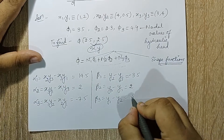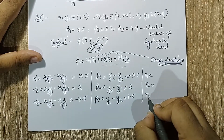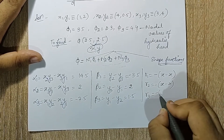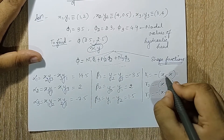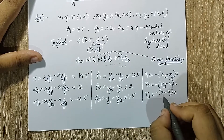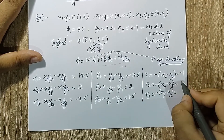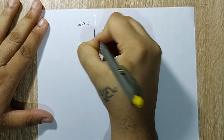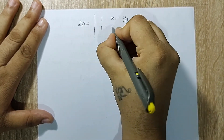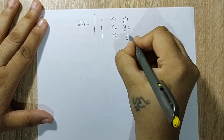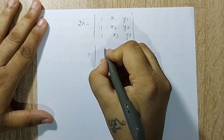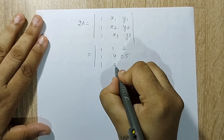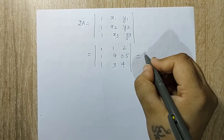The beta terms come out as minus 3.5, 2, and 1.5, and the gamma terms are minus 1, minus 2, and 3. After this I will calculate 2A using the determinant: 1, x1, y1; 1, x2, y2; 1, x3, y3 — which is 1,1,2; 1,4,0.5; 1,3,4. When I solve this I get the answer as 9.